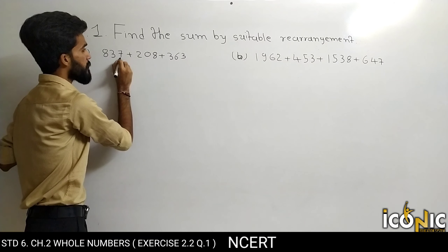Rearranged: 1962 plus 1538. Ab jo baaki terms bache hain: isme 3 hai aur isme 7, toh 3 plus 7 is 10 — isme bhi 0 aa raha hai. Plus 453, plus 647.